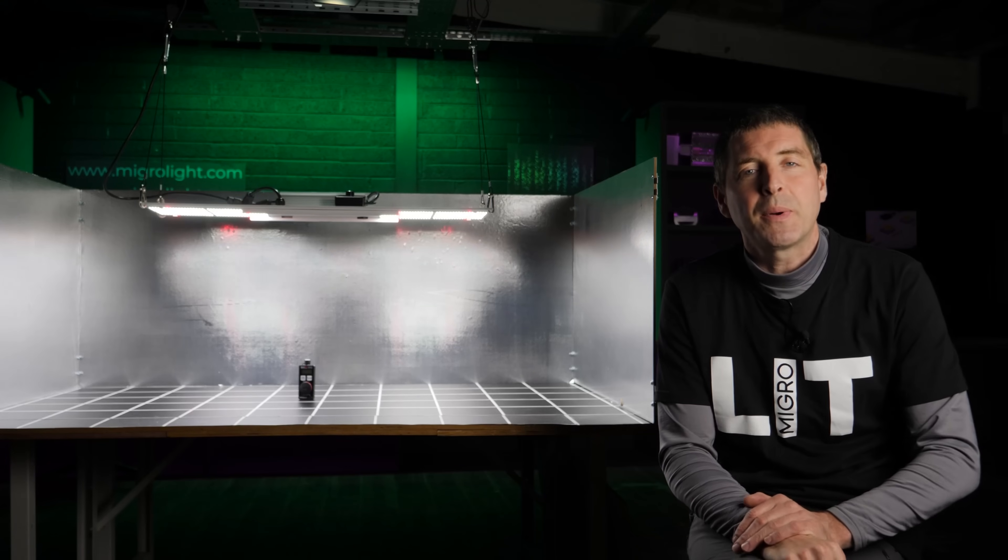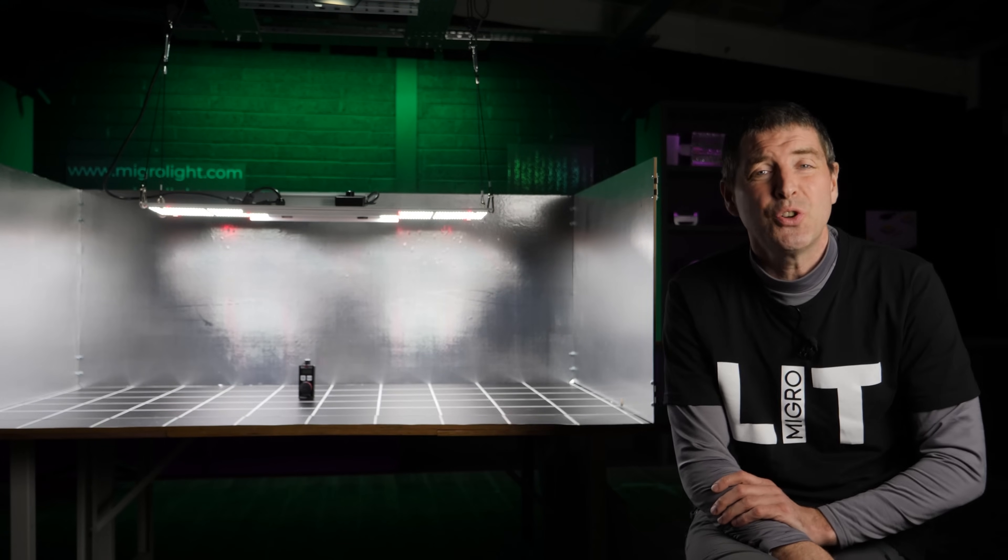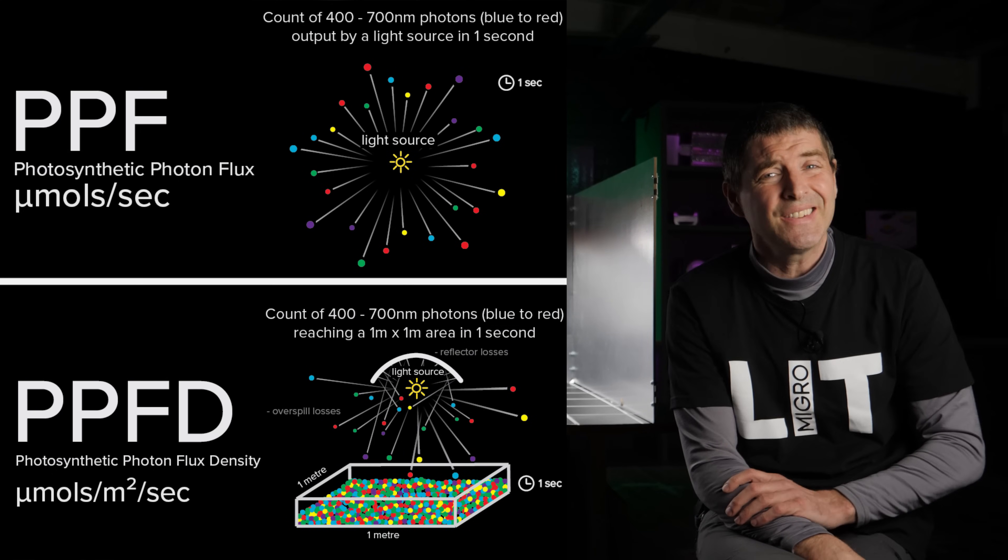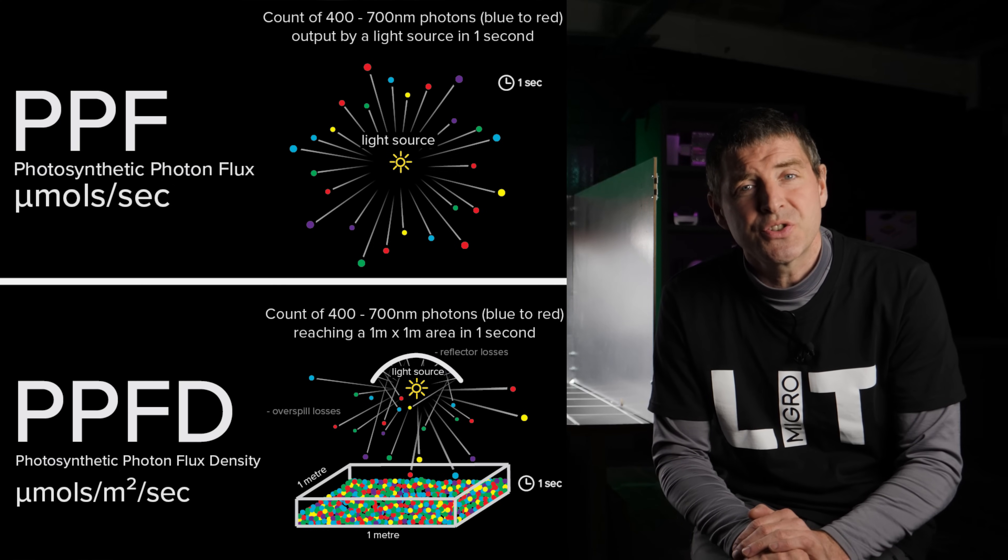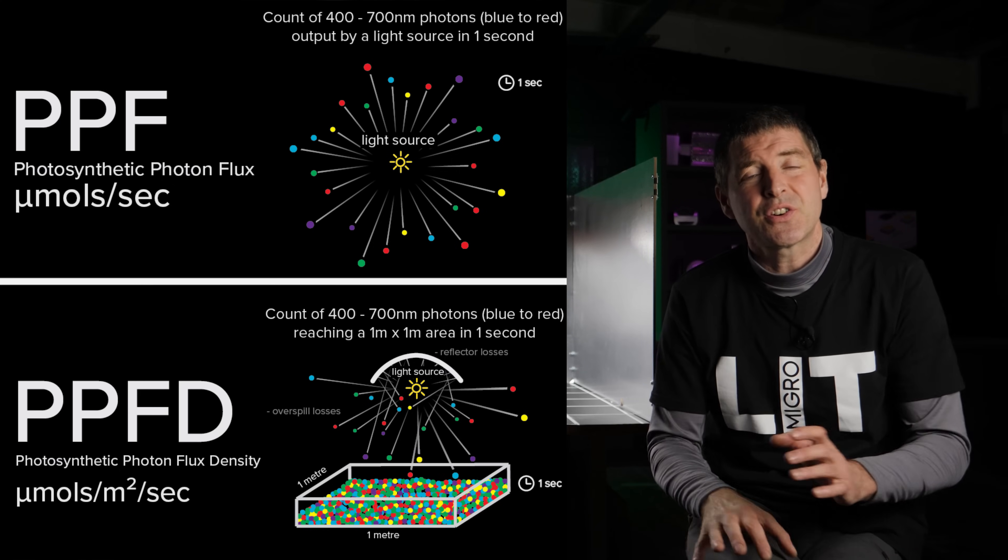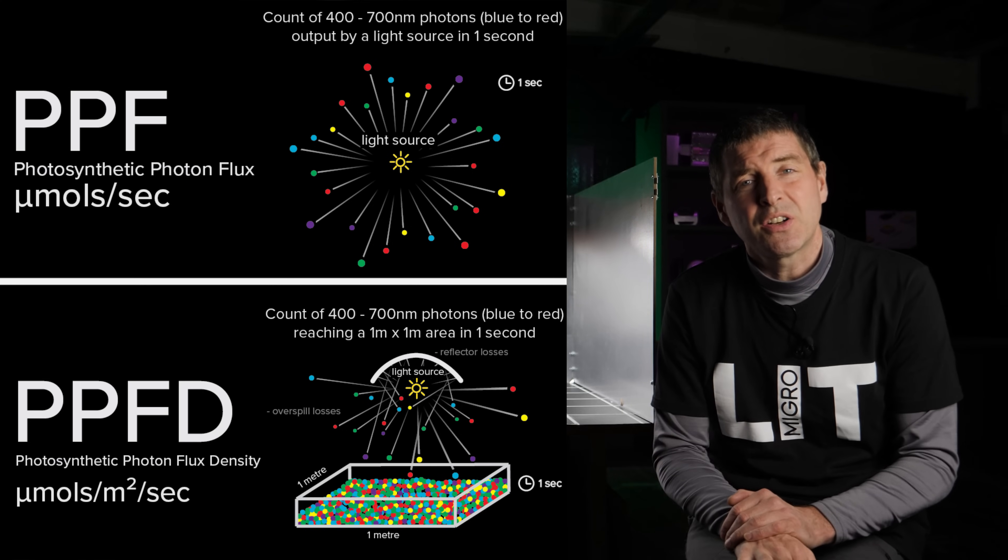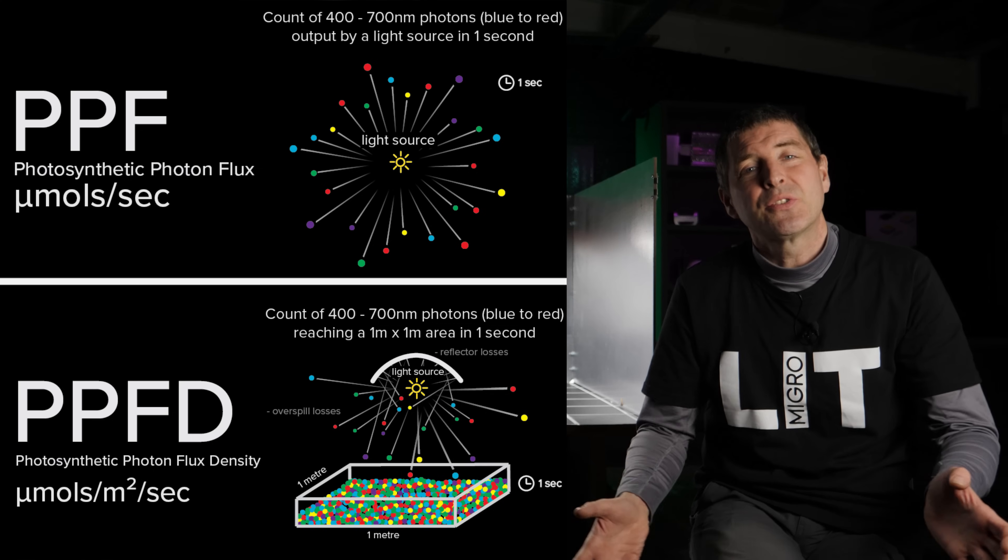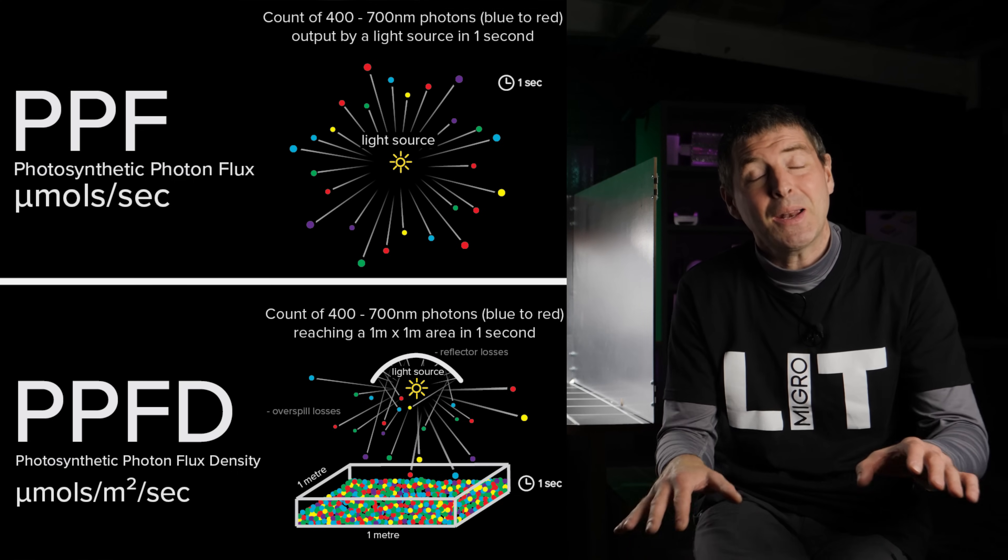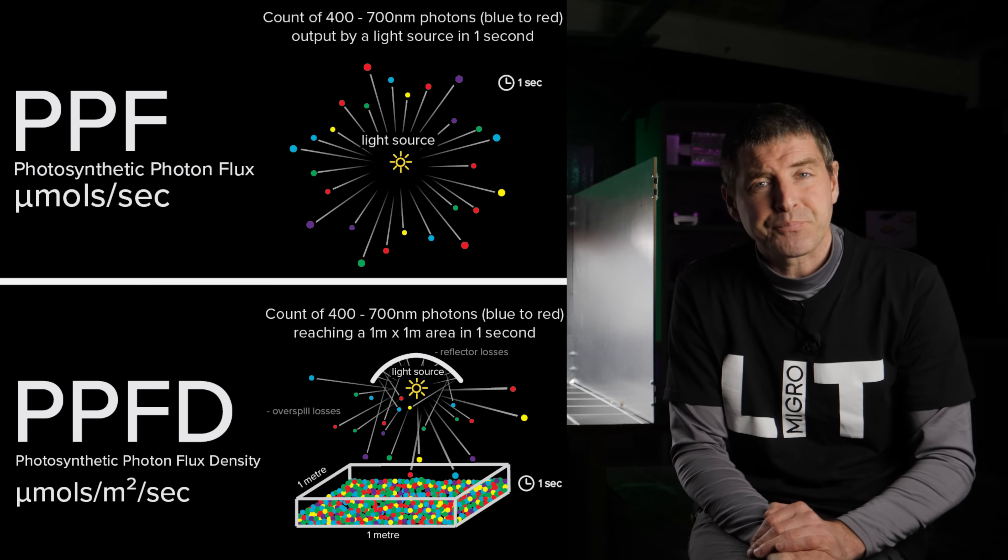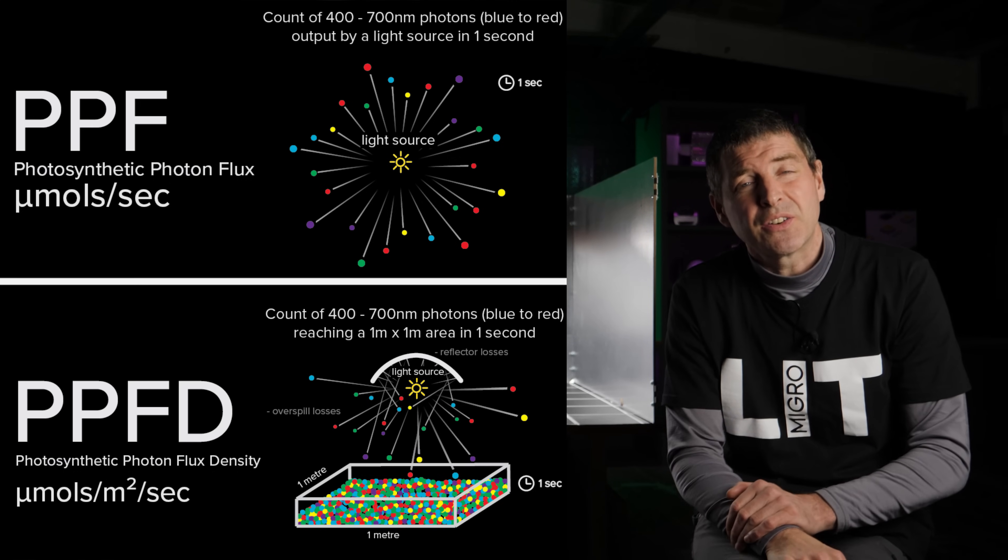I've got a graphic here to explain why the results are different. The first measurement is PPF per Joule or PPF per watt, the total amount of photons in the power range from 400 to 700 nanometers emitted by the fixture. The second one is PPFD, photosynthetic photon flux density, measuring it per meter squared. That's the total amount of light reaching a flat plane of one meter squared over one second of time.